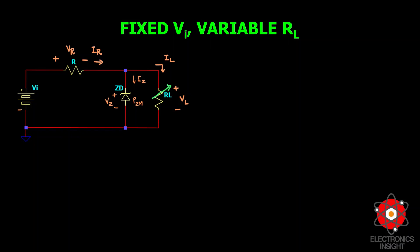We start with fixed VI and variable RL — this is the load regulation discussion. Due to the Zener voltage, there is a specific range of resistor values that will ensure the Zener diode is in the on state. Too small a load resistance will result in a voltage VL across the load resistor that is less than VZ, putting the Zener device in the off state. Please watch the previous video for better understanding of when the Zener diode will be in the on or off state.